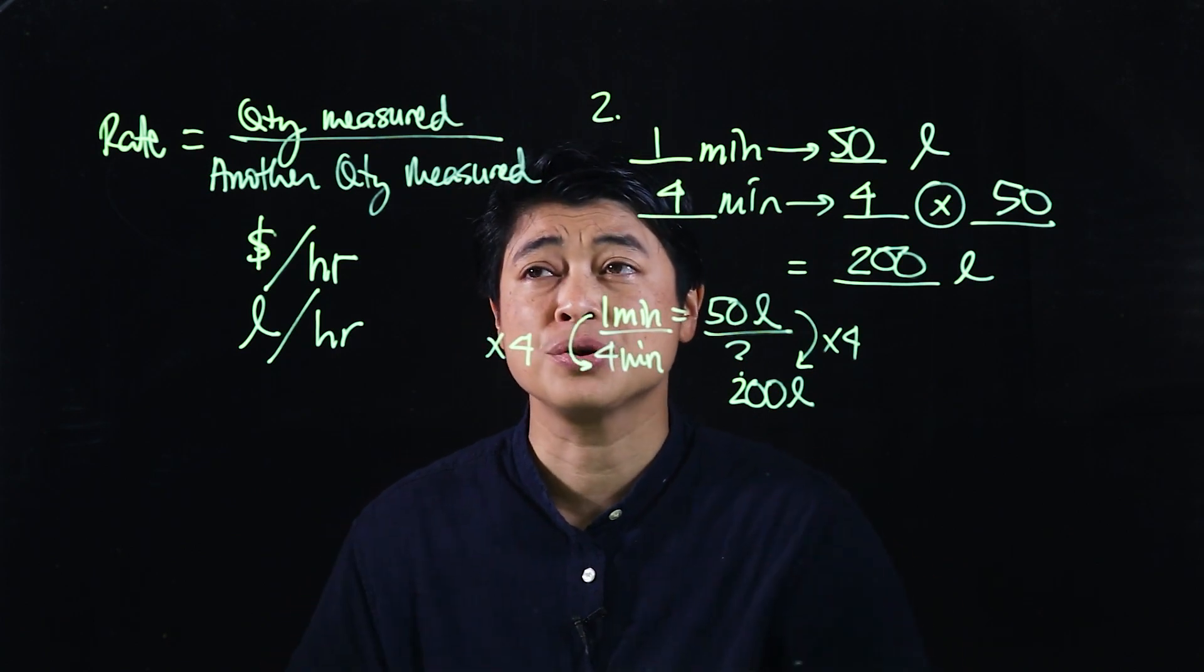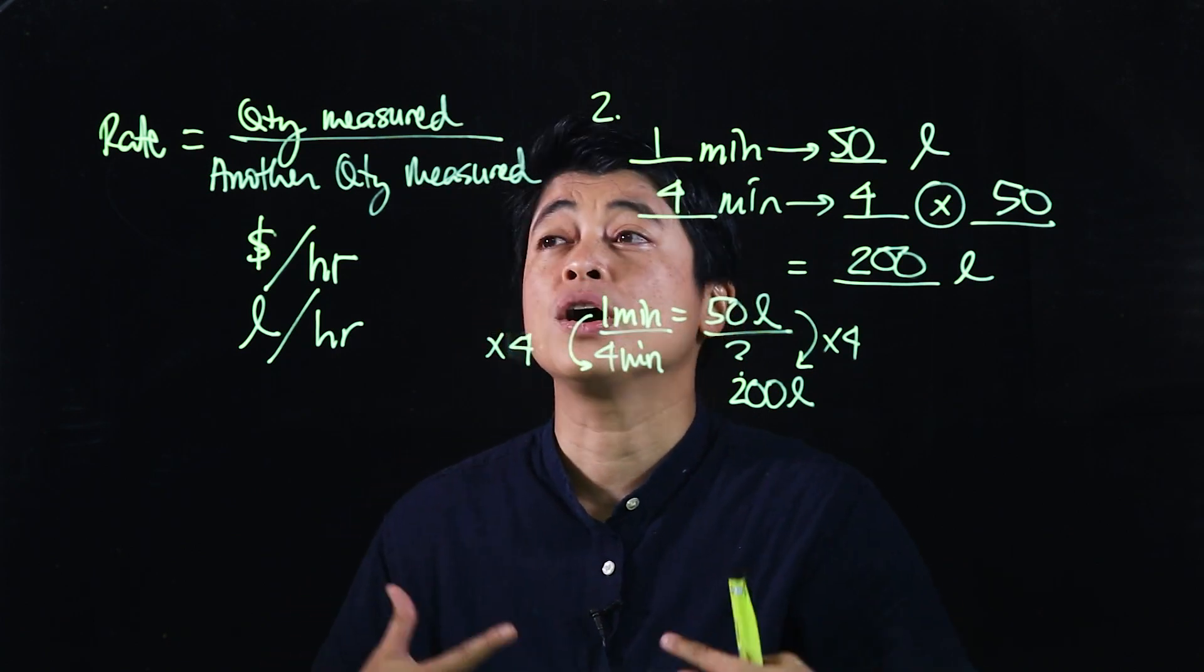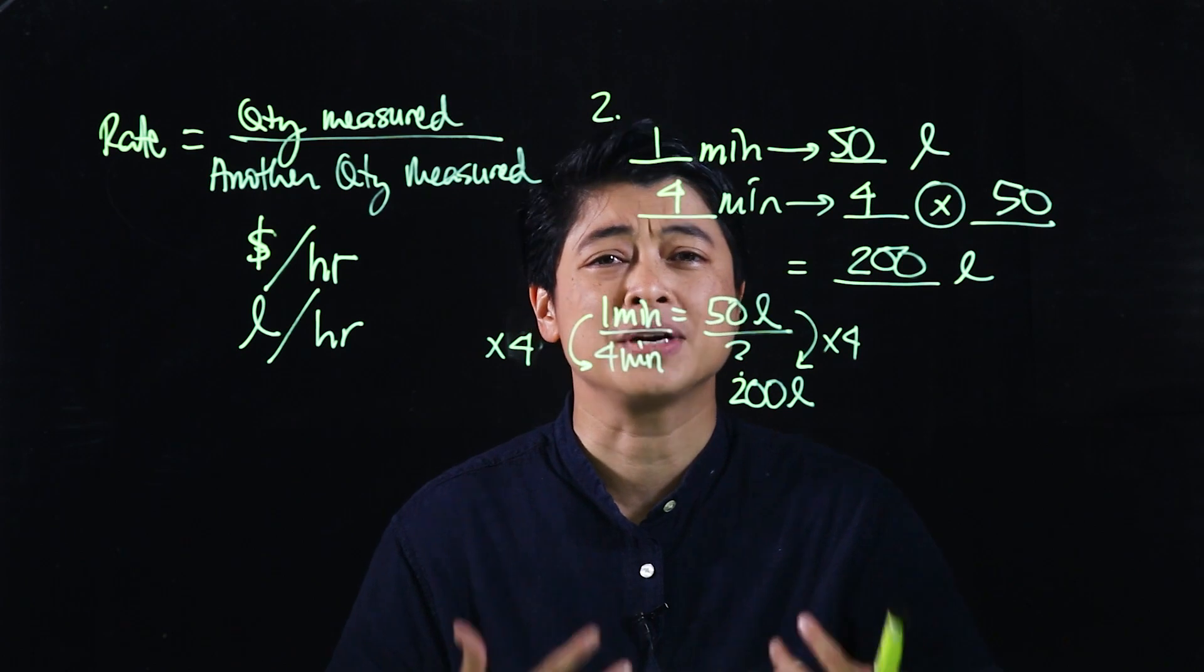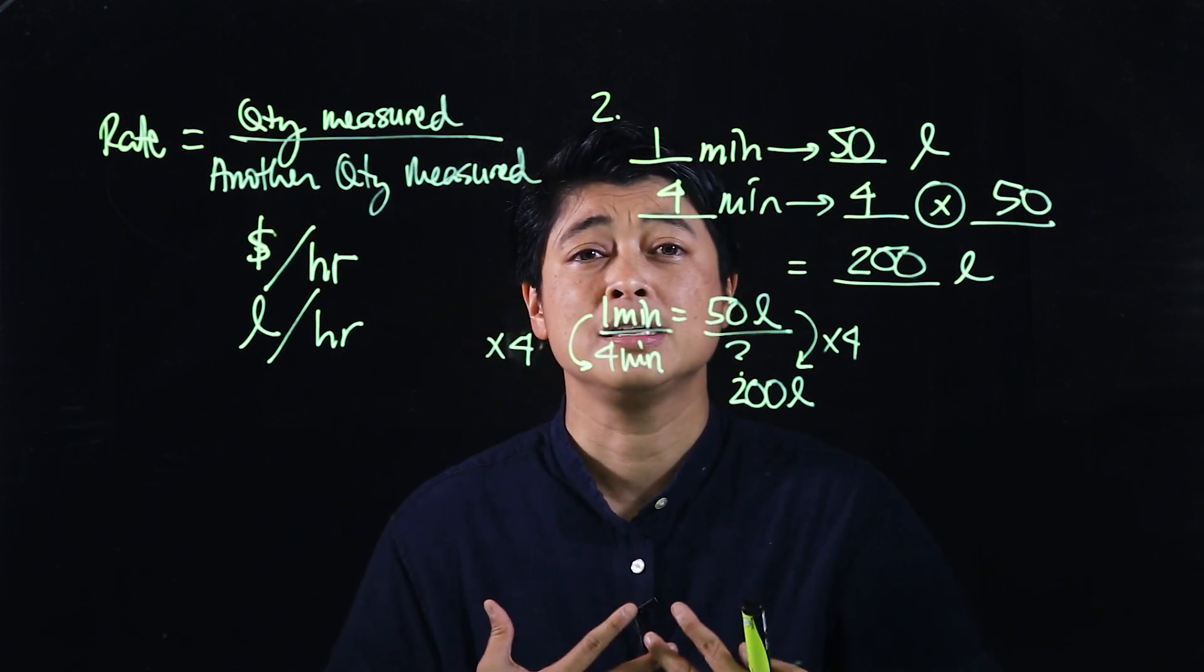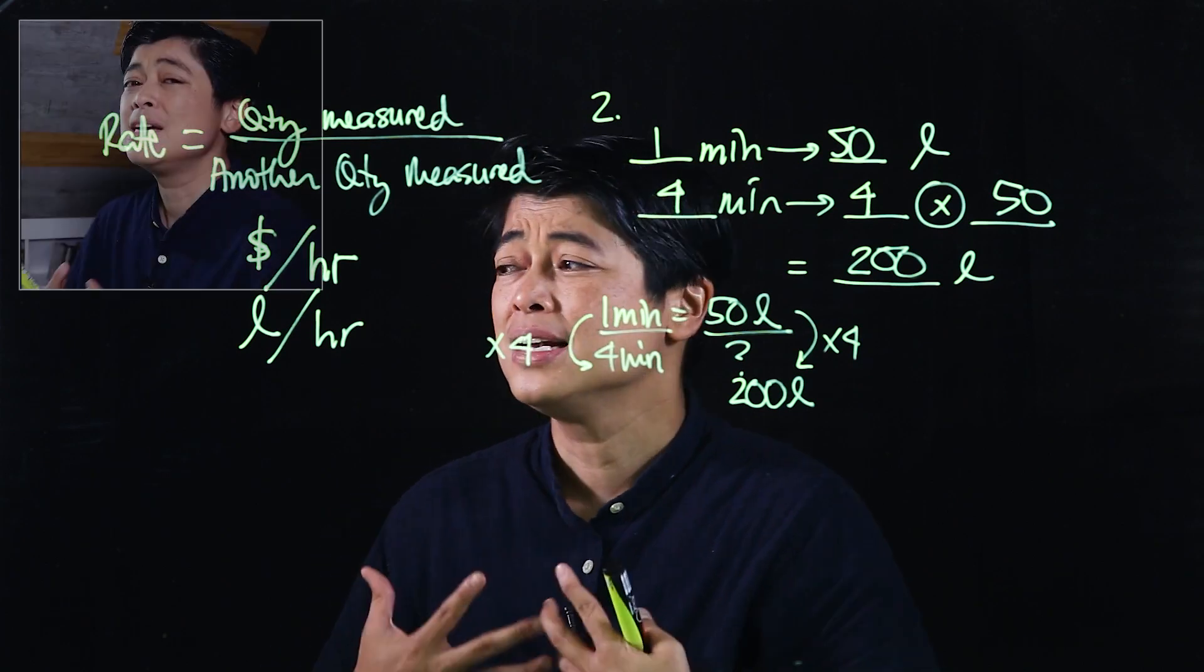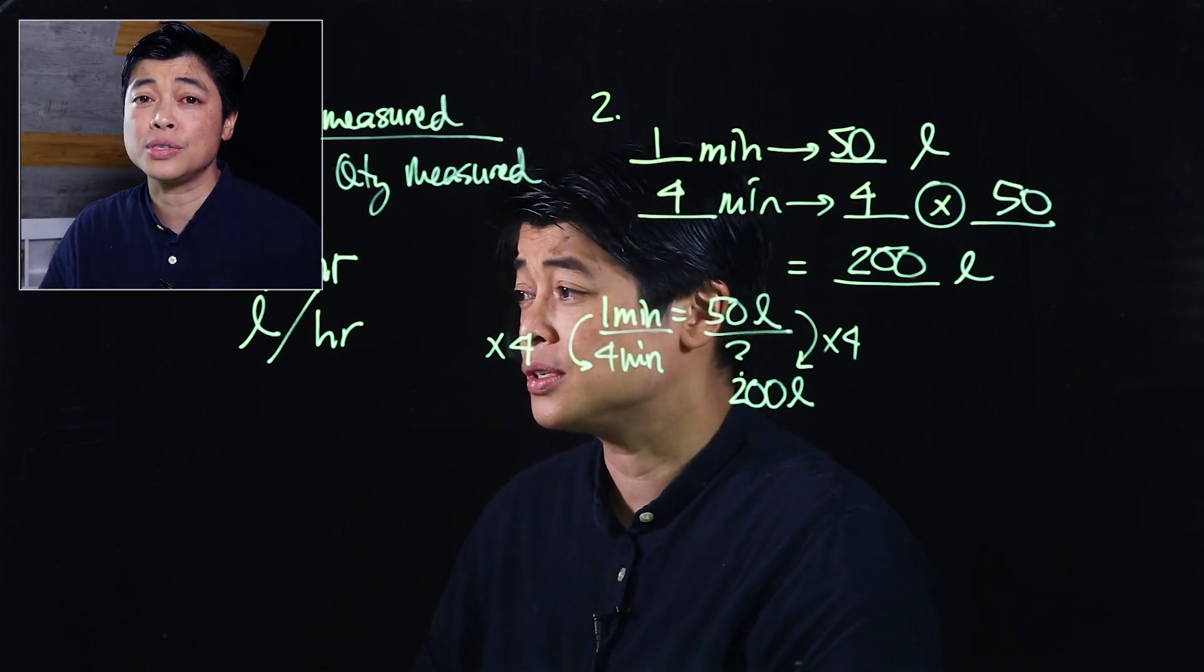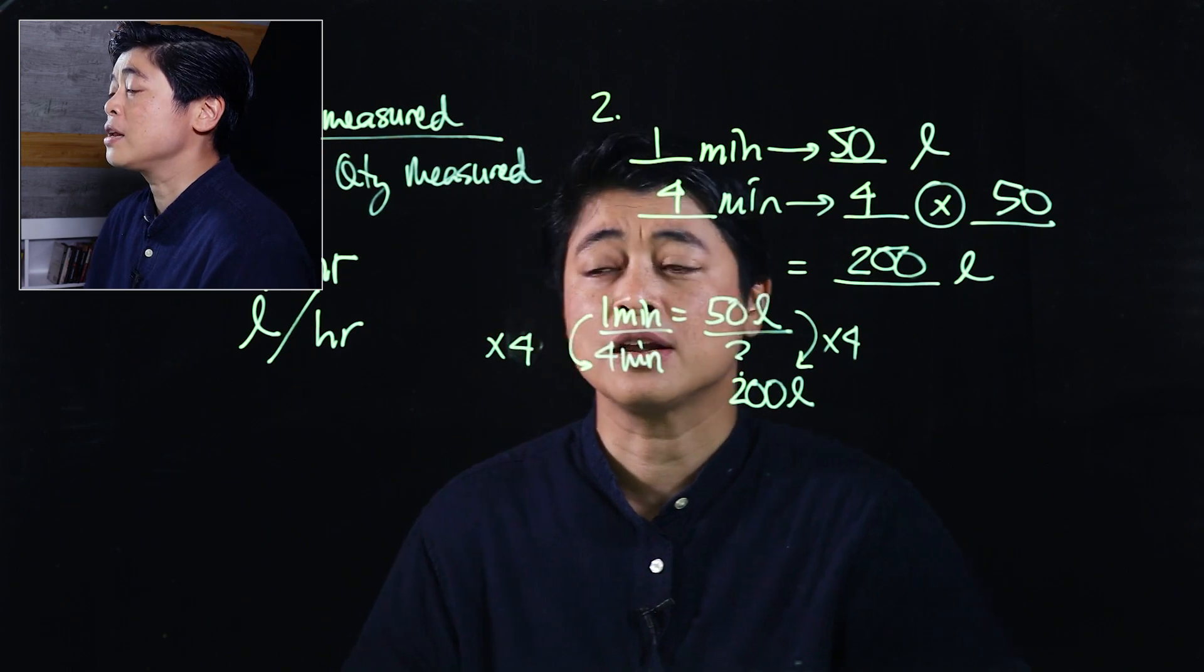So again, it could be this way times 50, this way times 50—it still gives me 200 liters. So this approach can be used for ratio, it could be used for rate, it could be used for percent, because all of these are fractions.